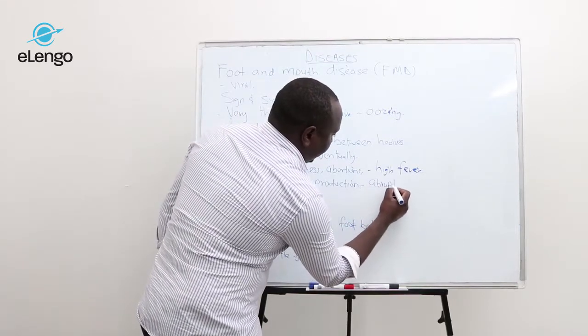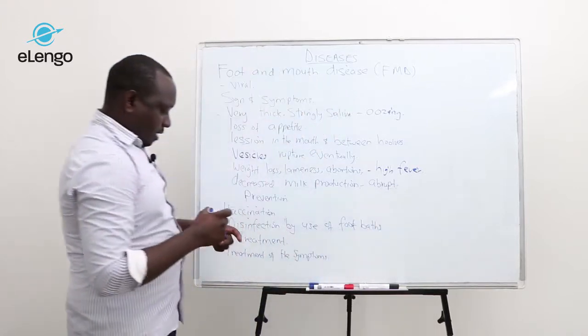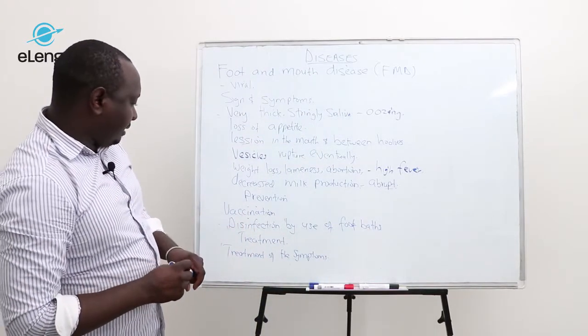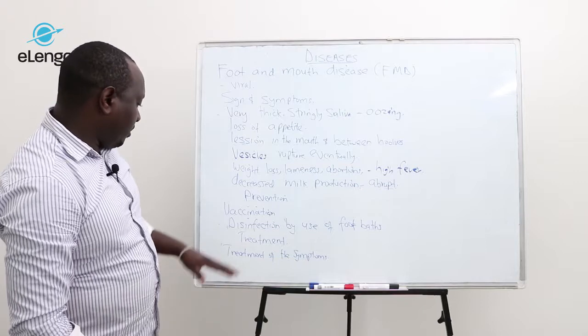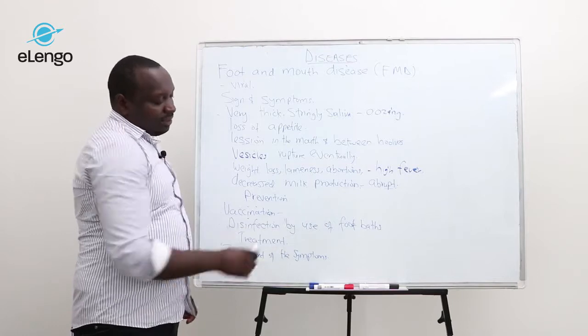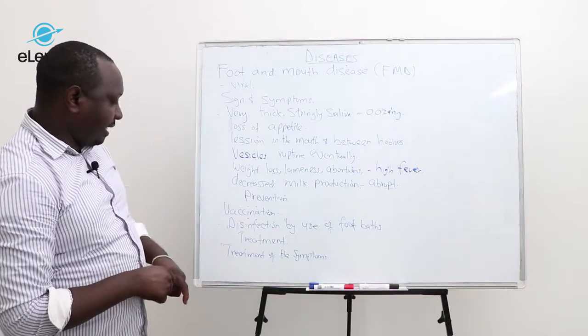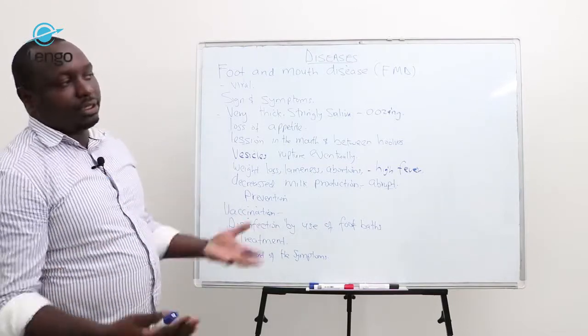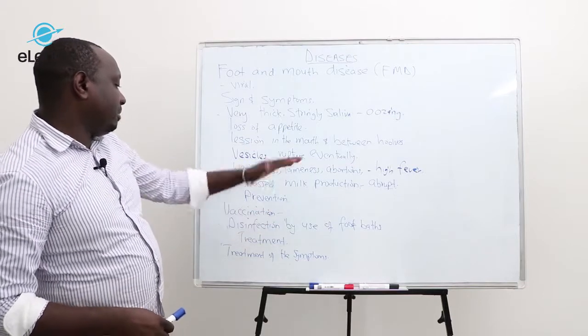Prevention of this disease has two ways. One is vaccination. Animals are vaccinated when the case has already been identified in a given area.